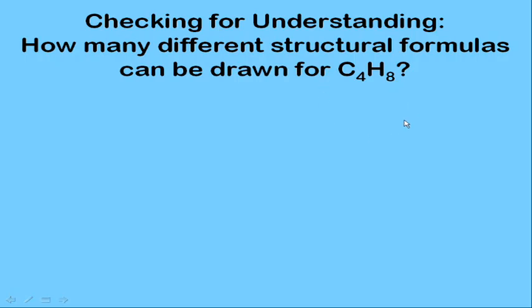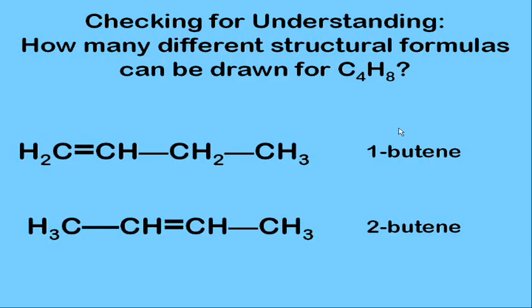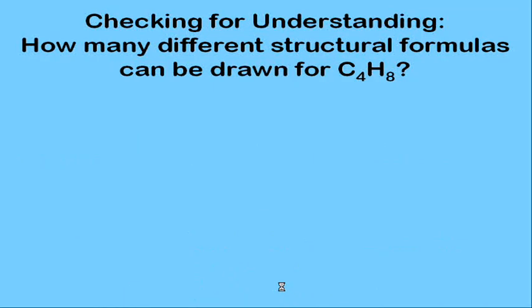To check for understanding, let's look at the molecular formula C₄H₈. Starting with double bonds, we already know 1-butene and 2-butene are two examples, and there's no such thing as 3-butene. It's also worth noting that 2-butene actually has two different isomers called cis and trans — geometric isomers — but we won't cover that in this tutorial.